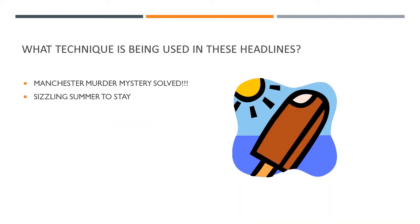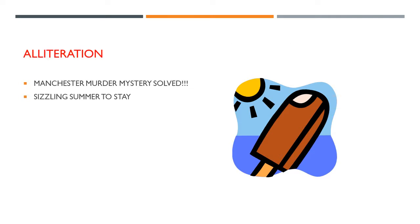What technique is being used in these headlines? 'Manchester murder mystery solved' and 'Sizzling summer to stay.' Pause the video to jot it down. So of course it's alliteration — you've got multiple words starting with the same letter.